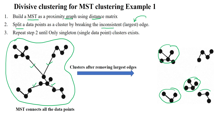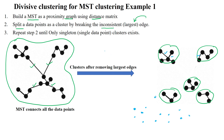Then again we will apply the divisive clustering method by removing the bigger edge cost. In the next step, we will apply divisive clustering to remove the highest edges one by one. Finally, you will get individual data points, and each data point will become one single singleton cluster.